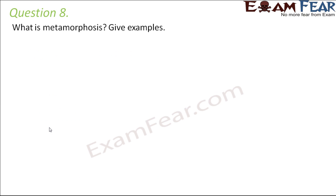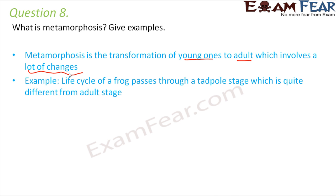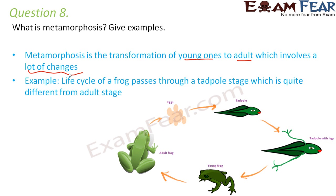Question number eight: what is metamorphosis? Give examples. Metamorphosis is the transformation of young ones into adults, which involves a lot of drastic changes. Metamorphosis does not take place in all organisms — only in certain organisms where the young ones look very different from the adult form.